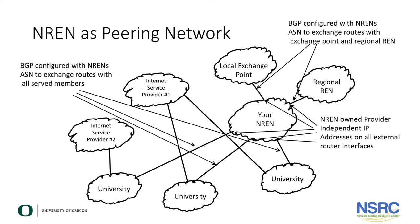When the NREN is a peering network, you can see that the NREN must have provider-independent address space on all external router interfaces, connecting to the upstream providers, including those connected to the internet exchange, other RENs, and connected university members.